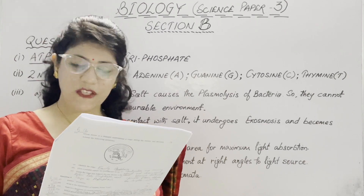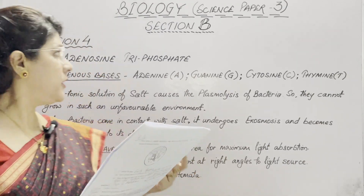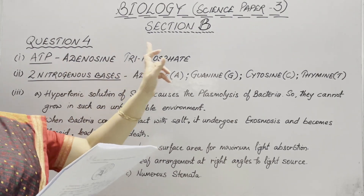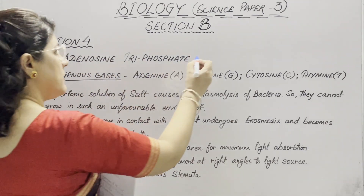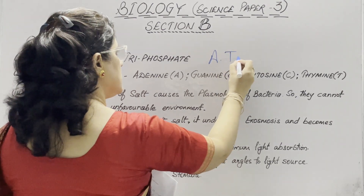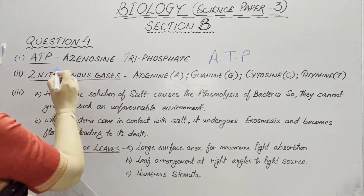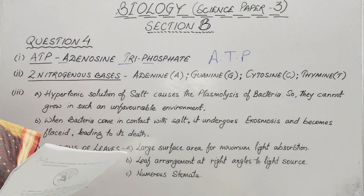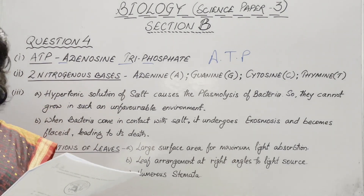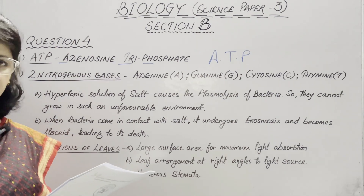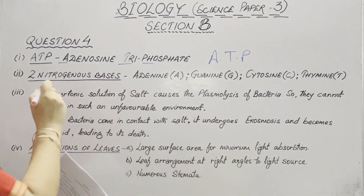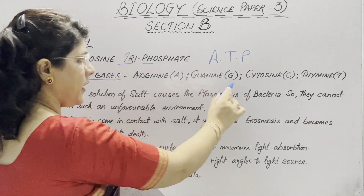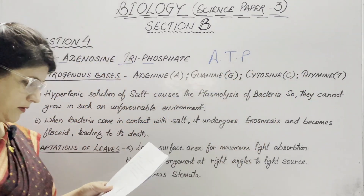Coming to question number 4. The first part is to expand the abbreviation ATP — adenosine triphosphate. Next, name any two nitrogenous bases. We know the structure of DNA and nucleotide, in which nitrogenous bases are present. Any two you can write: adenine, guanine, cytosine, and thymine.